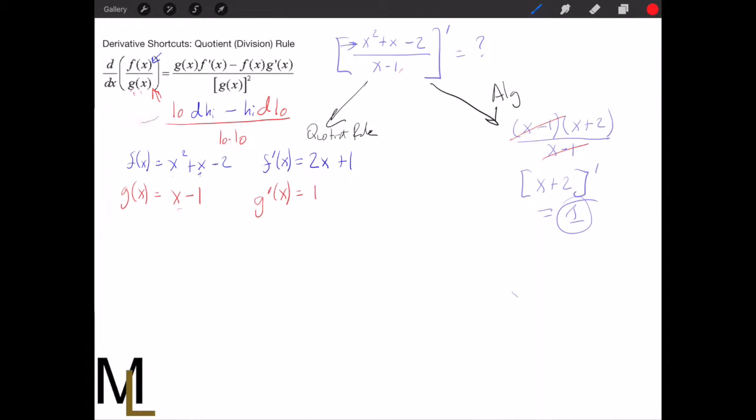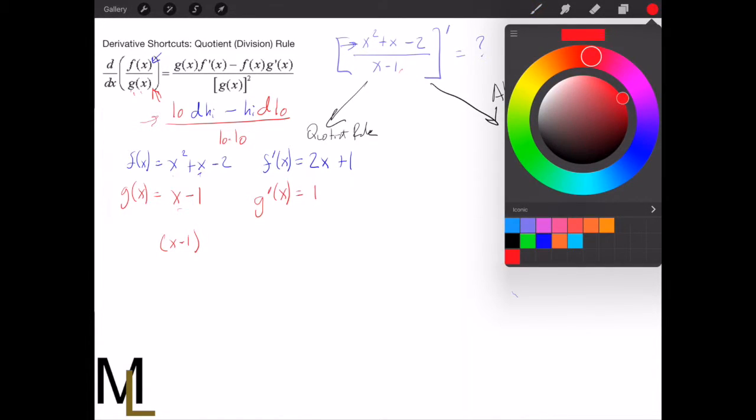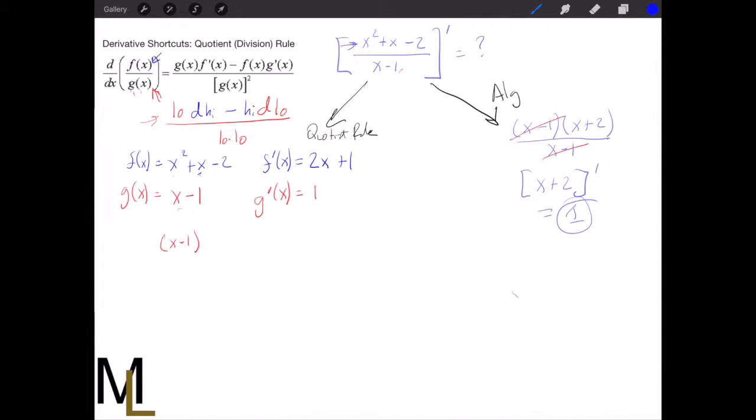So now let's take our low d high minus high d low over low low, right? So low is the first one. So that's going to be x minus 1. And d high, so d high is going to be the f prime of x we found already, 2x plus 1.